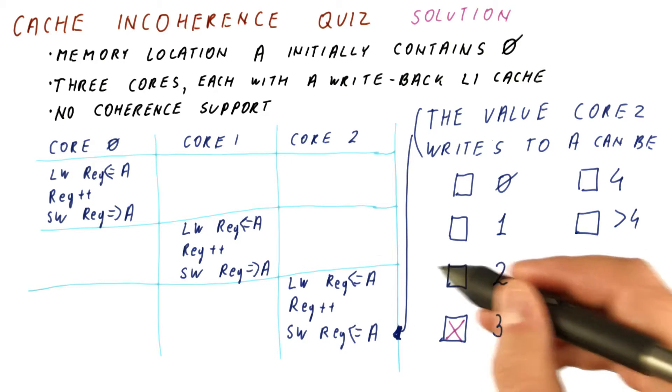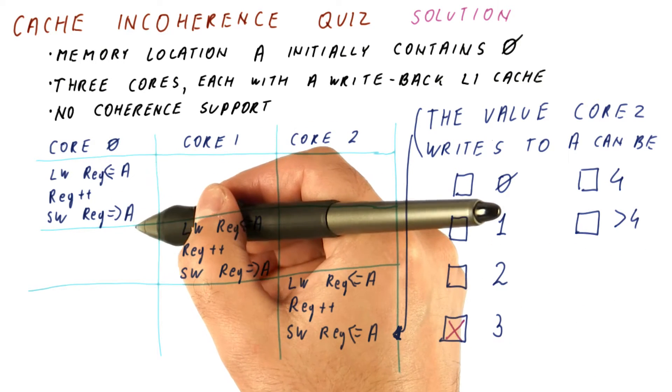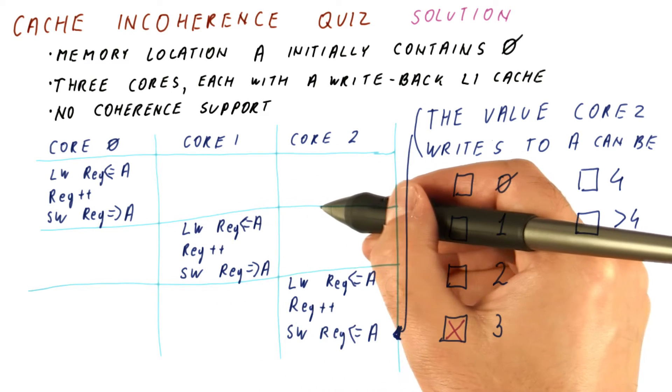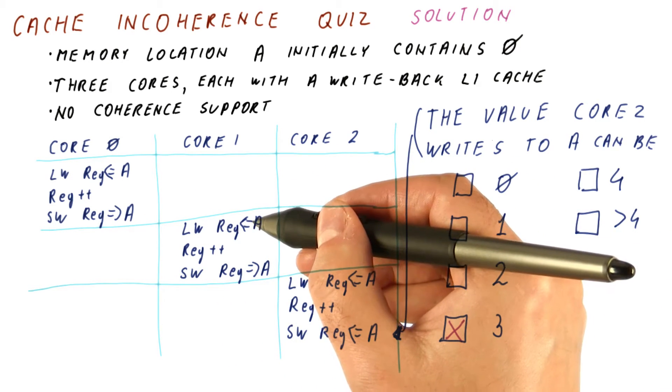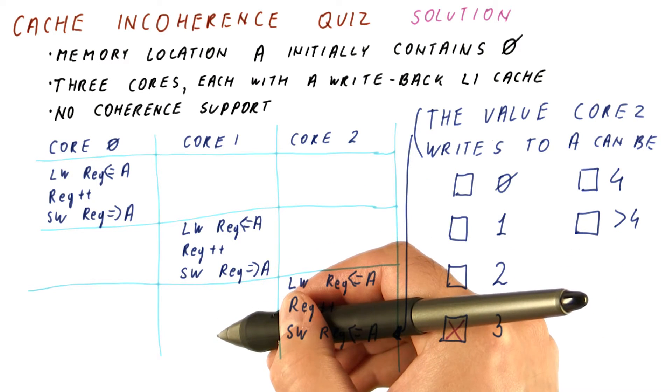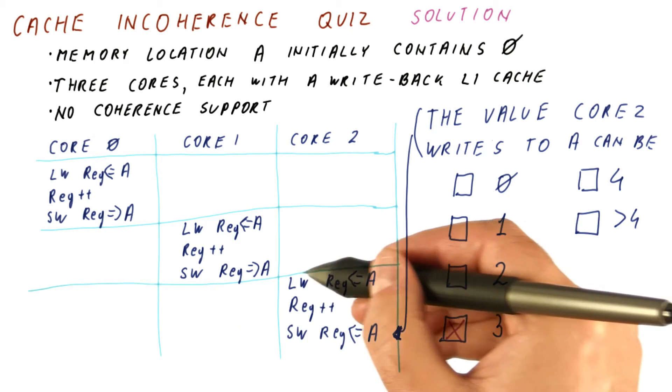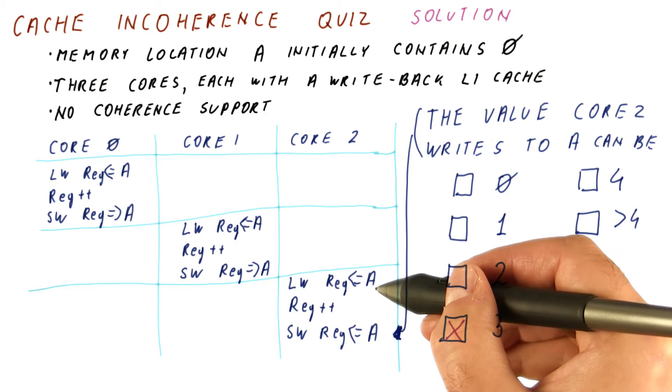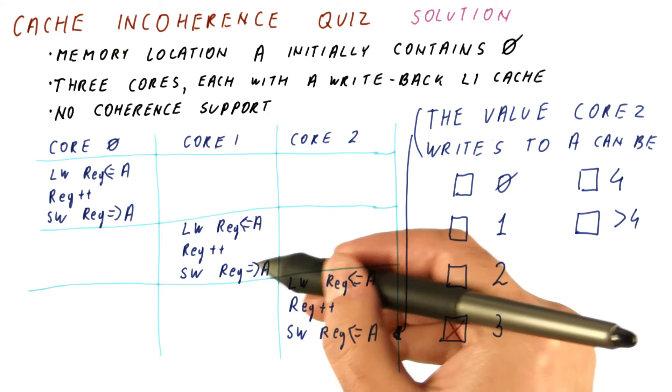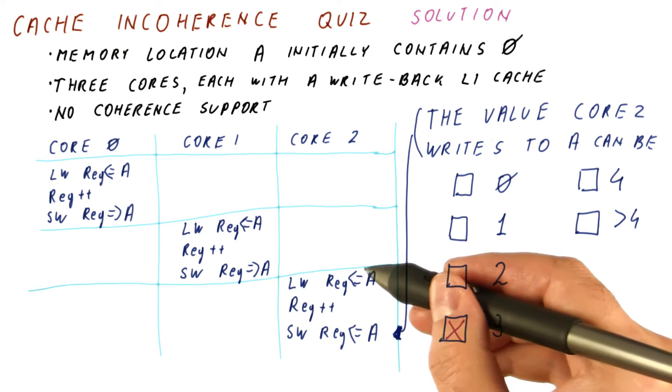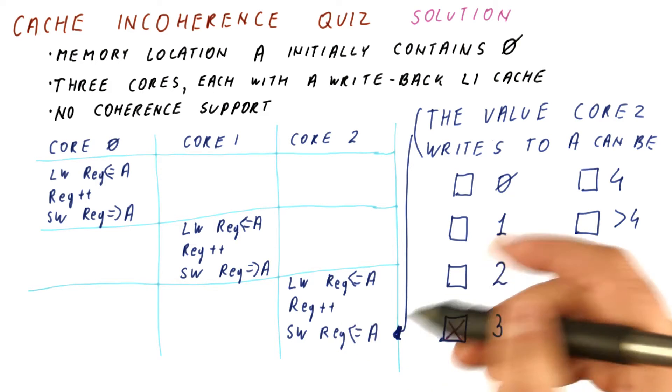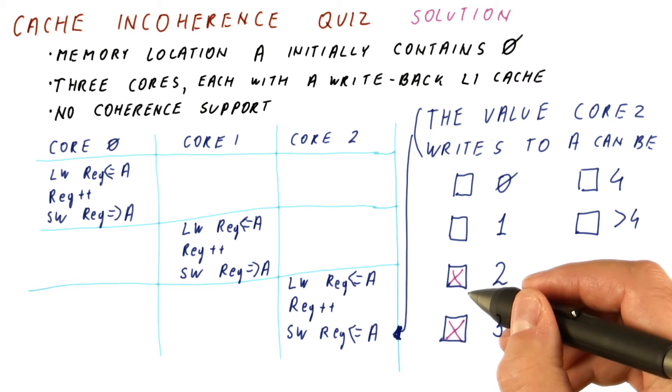So let's see now if we can get 2. Well, if core 0 does a replacement, so the memory location after this actually contains a 1, then core 1 does this, but doesn't replace the block from the cache, then core 2 will still see a 1. It will not see what core 1 produced, because core 1 keeps it in its own cache. So core 2 here reads 1, increments it, and then core 2 ends up writing a 2. So this is a possible answer.